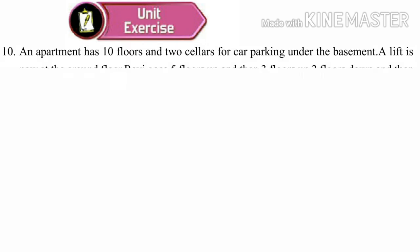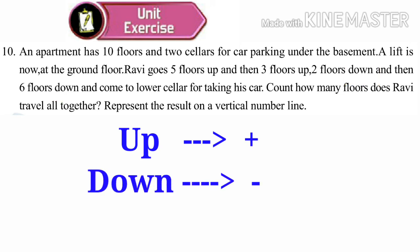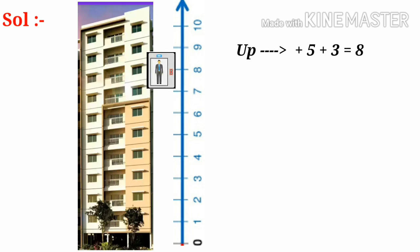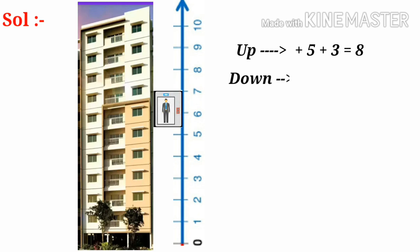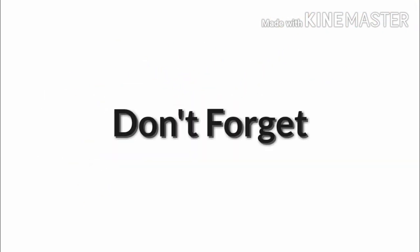Now last, tenth problem: an apartment has 10 floors and two cellars for car parking under the basement. A lift is now at the ground floor. Ravi goes five floors up and three floors up — up indicates positive; two floors down and then six floors down — down indicates negative — and comes to the lower cellar for taking his car. Count how many floors does Ravi travel altogether and represent the result on a vertical number line. Solution: take a vertical number line. Ravi goes five floors up, that is plus 5, then three floors up, that is plus 3 — total 8 floors upward. Then down two floors, minus 2, and down six floors, minus 6 — total minus 8 downward. Upward 8 floors and downward 8 floors, so the total floors Ravi travels is 8. Thanks for watching the video, don't forget to subscribe.